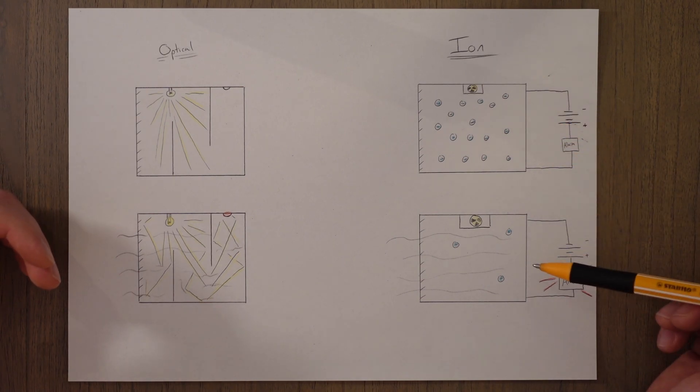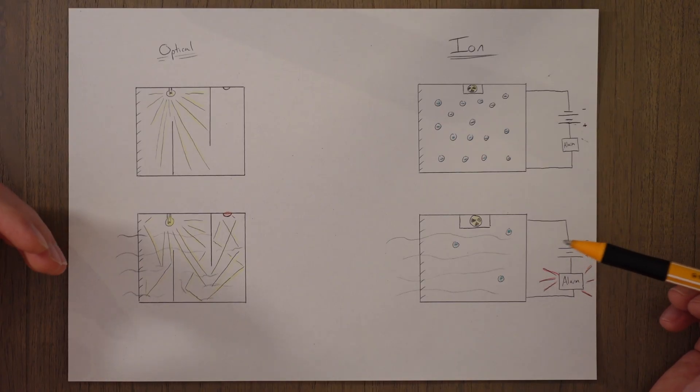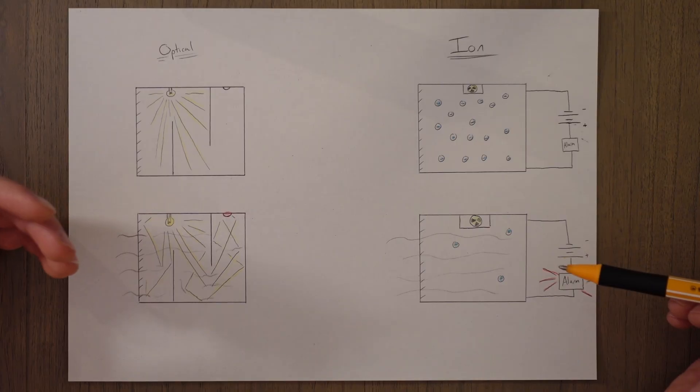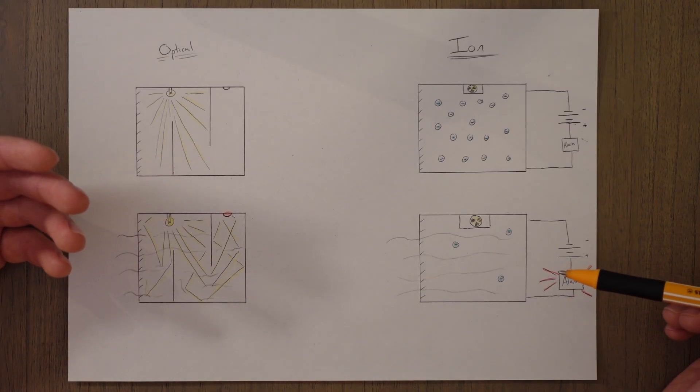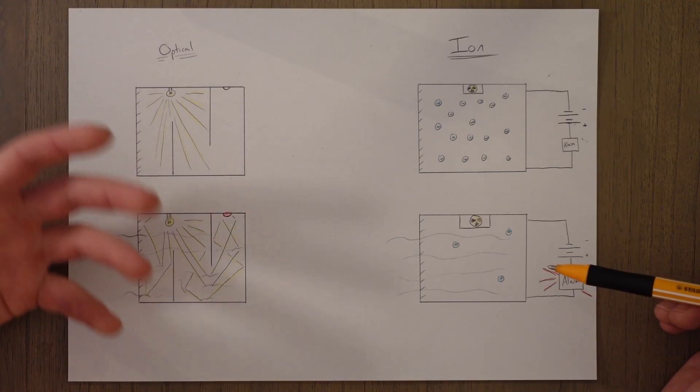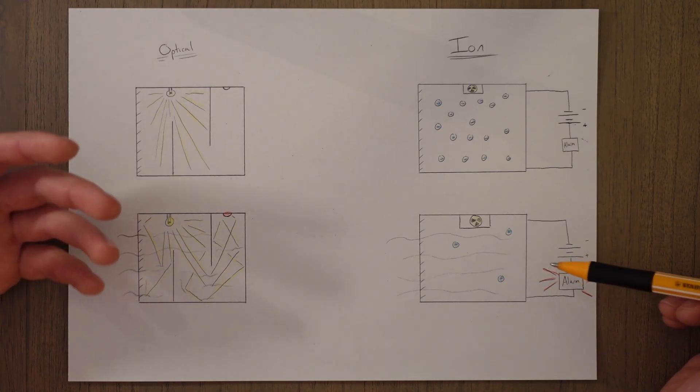When there are not enough oxygen particles in the air because they've been replaced by smoke, then the circuit breaks or the current falls below a threshold which leads to the alarm going off. This is sometimes why things like deodorant might cause the smoke alarm to go off. The oxygen is replaced by the lovely smelling particles of the deodorant which breaks the circuit.